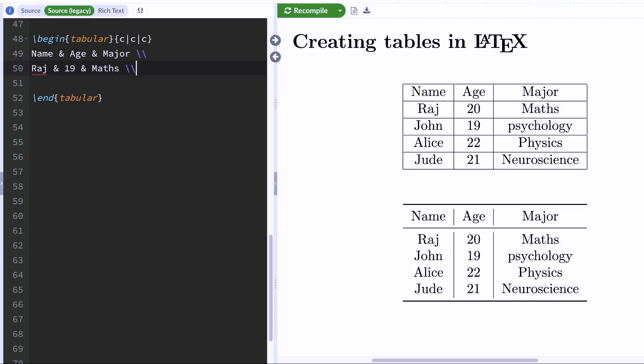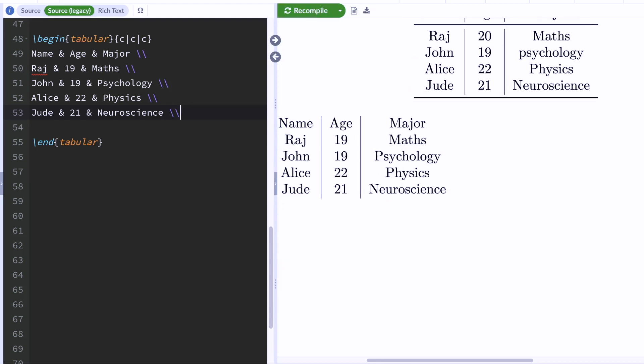Again, the ampersand symbol tells LaTeX that Raj, 19, and Maths go in different columns. Raj goes in the first column, 19 belongs to the second column, and correspondingly, Maths is in the third column. And I'm going to use double backslash to change lines. Okay. Now, let's hit compile and see what our table looks like. And here we have our table.